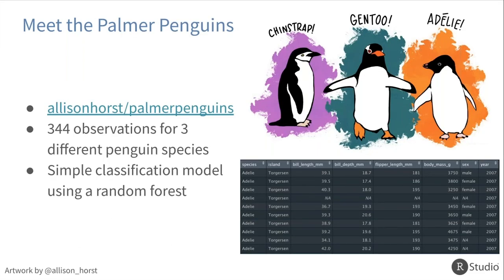Today we're going to work with the Palmer Penguins dataset. If you're unfamiliar, this is a fairly recent dataset in the R space. You can find more information at Allison Horst's GitHub repository linked in the slides. Basically, we have 344 different observations for three different penguin species — Chinstrap, Gentoo, and Adélie. If you're familiar with the IRIS dataset, this is a similar style dataset, fairly easy to understand. You can see a preview of the data in the bottom right-hand corner.